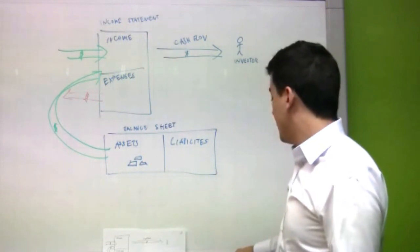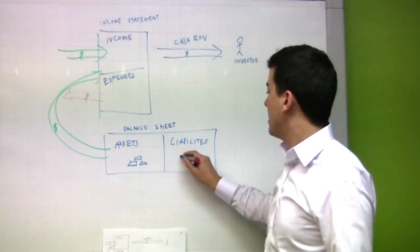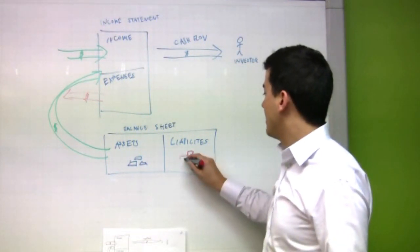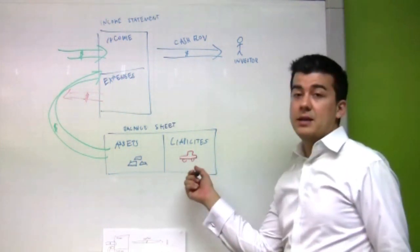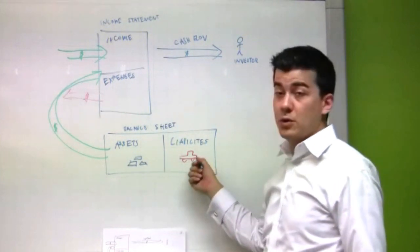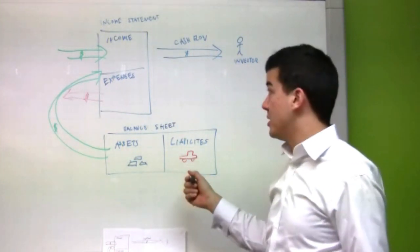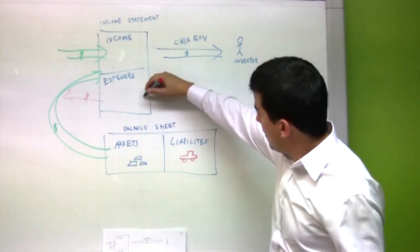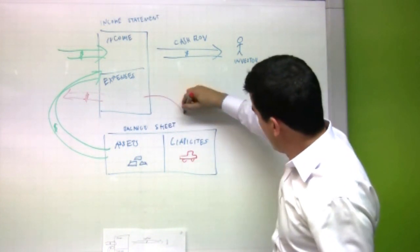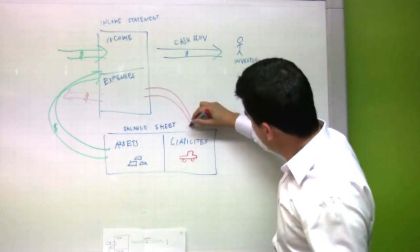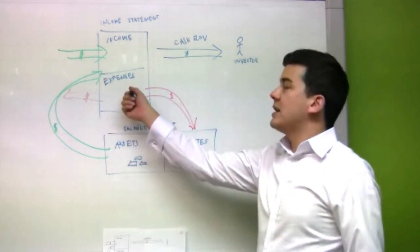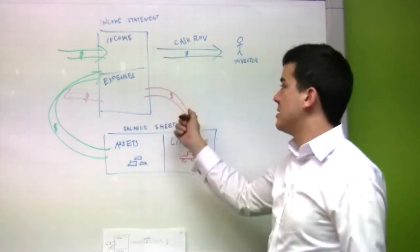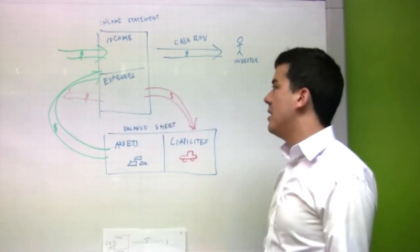Now, liabilities, on the other hand, for example, let's have a look at the company car. That takes money to maintain. It costs money for fuel, insurance, etc. So, that's actually money which costs us. So, our expenses increase. Money flows out and into our liabilities.